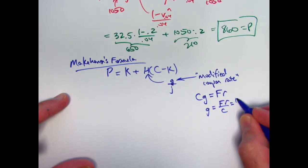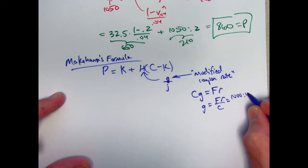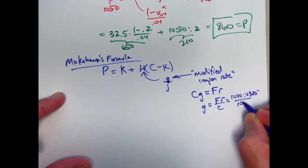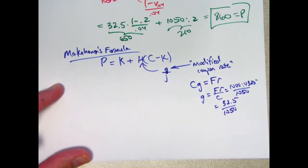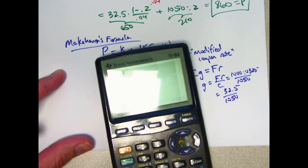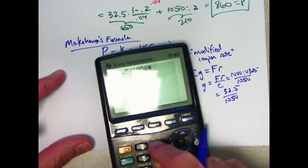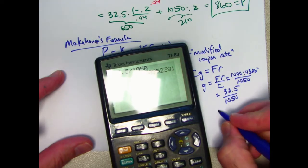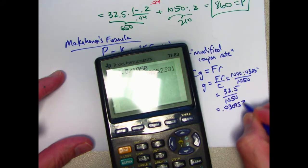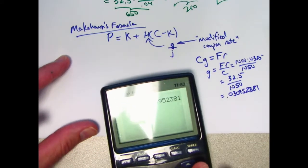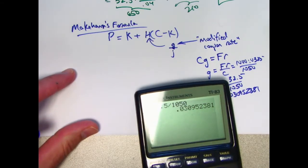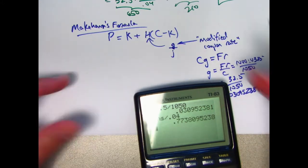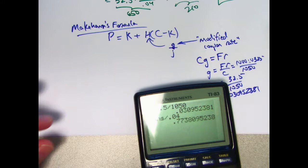In this problem, that's 1,000 times 0.0325 divided by 1,050. 32.5, the amount of each coupon, divided by 1,050, the redemption amount. 32.5 divided by 1,050, G is 0.030952381. That needs to get divided by J, the yield rate, the semi-annual yield rate, which is 0.04. So this quantity H for this situation is about 0.77381.